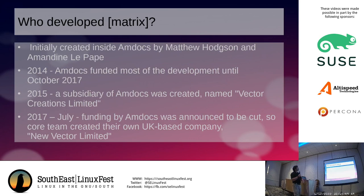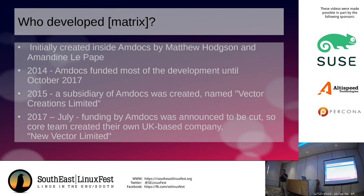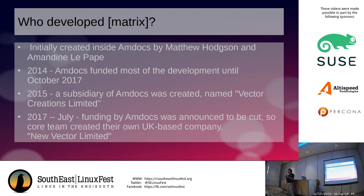Matrix was originally created inside of Amdocs by Matthew and Amanda Lynn. In 2014, Amdocs funded most of the development and continued to do that until about 2017. In 2015, they created a subsidiary specifically to work on the development of the Matrix protocol. And in July 2017, they cut funding. So the Matrix team founded their own organization for the continued development of the Matrix protocol, called New Vector Limited.